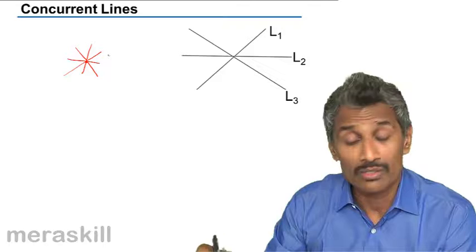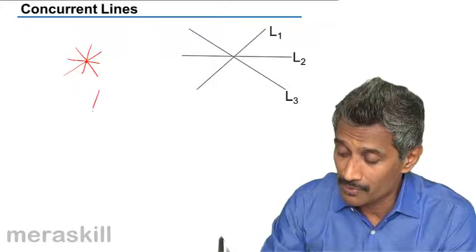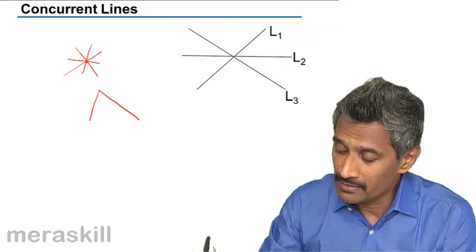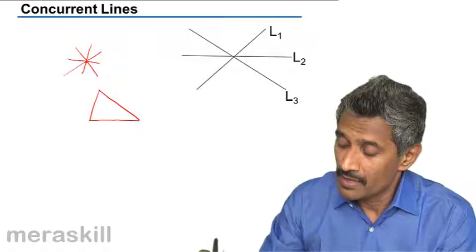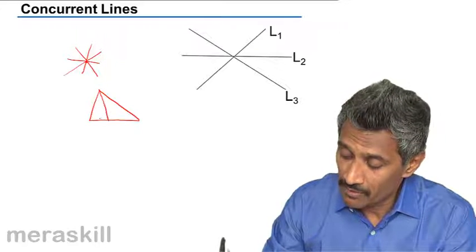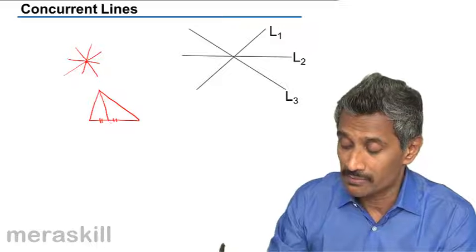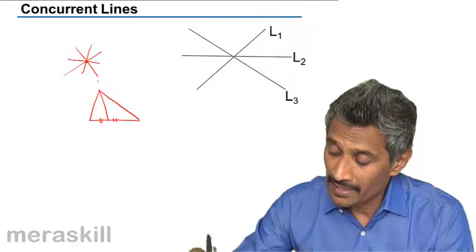Where do we apply this? For example, you have a triangle and you have the median, which is passing through the midpoint of one side and the opposite vertex.